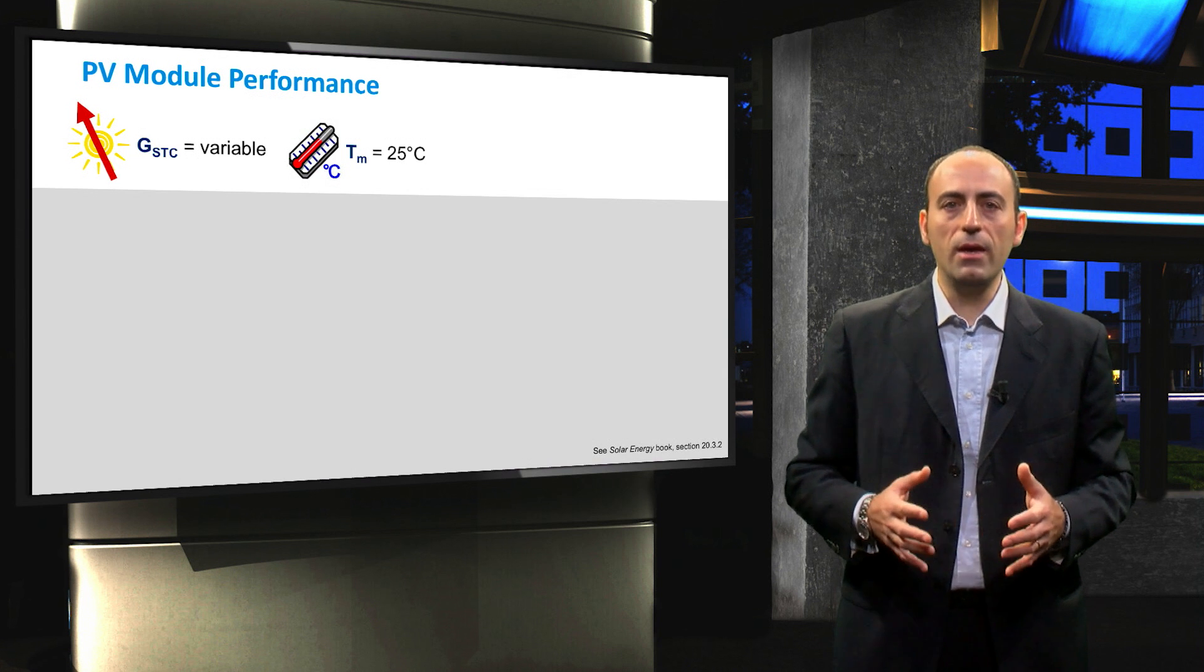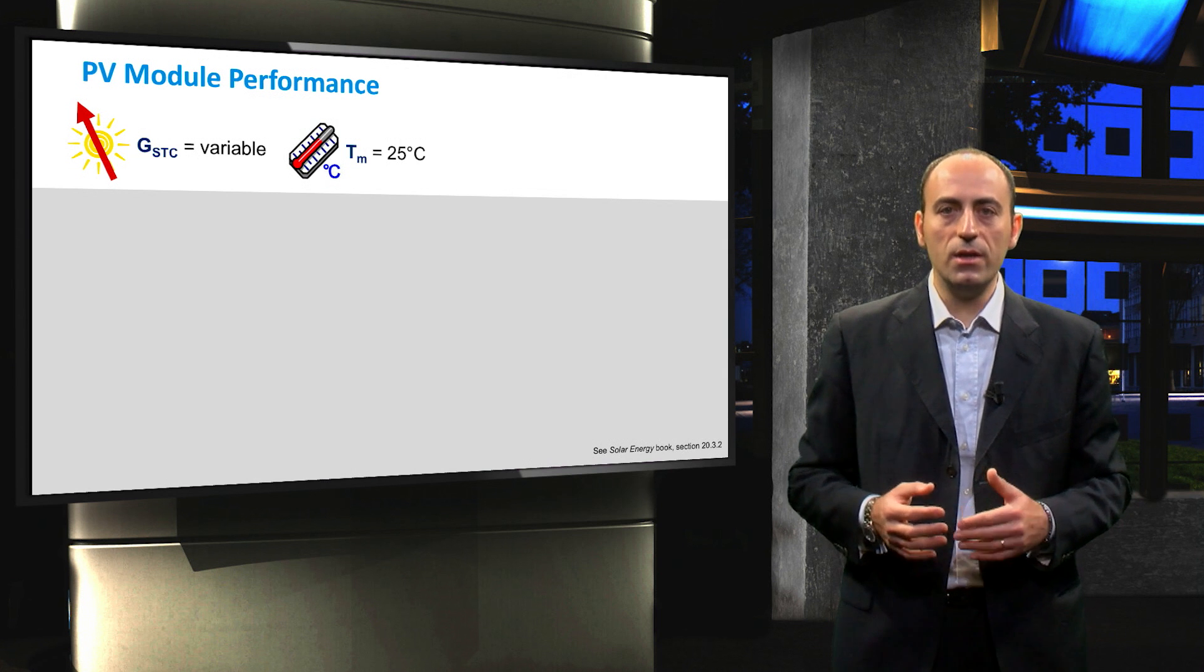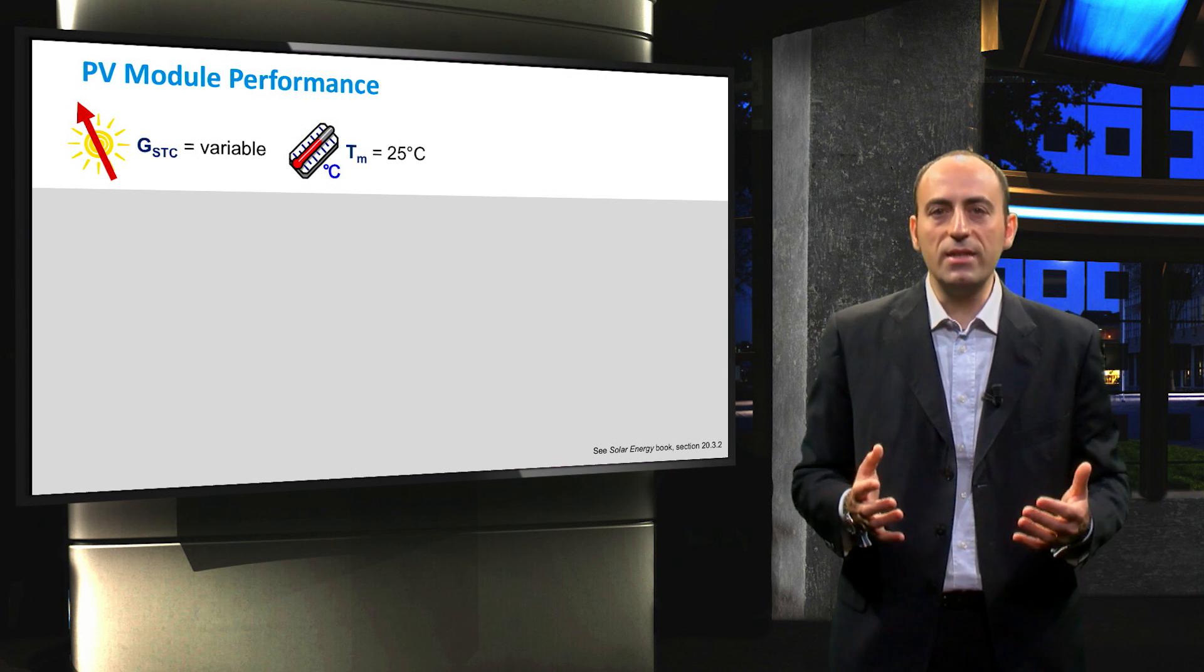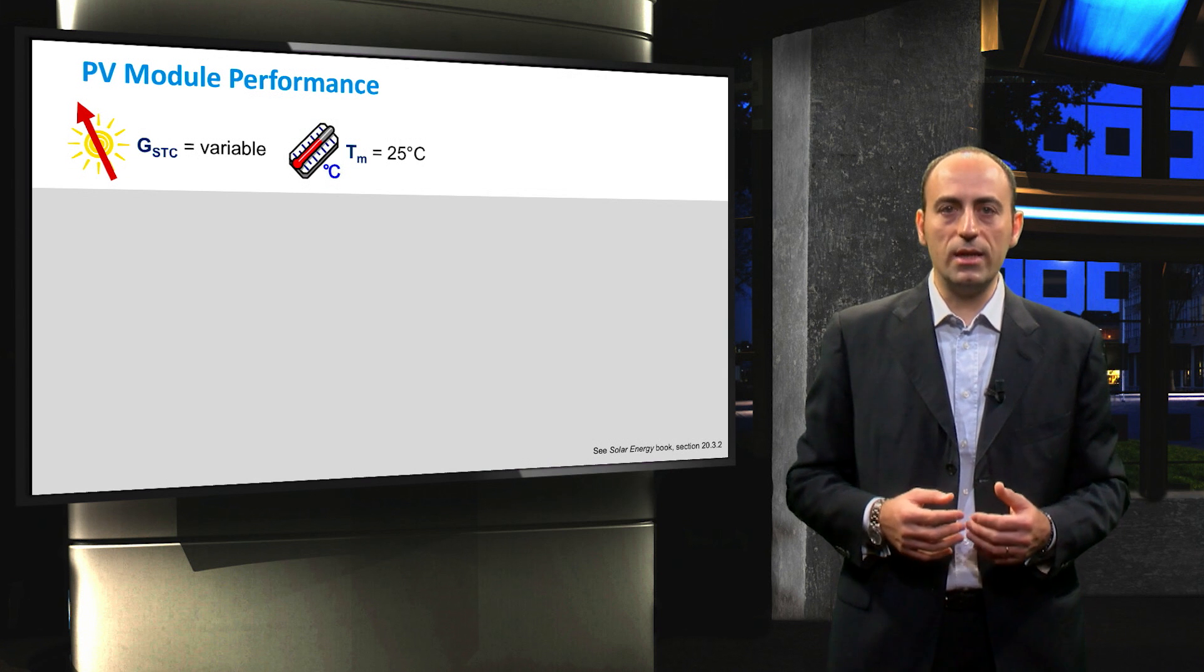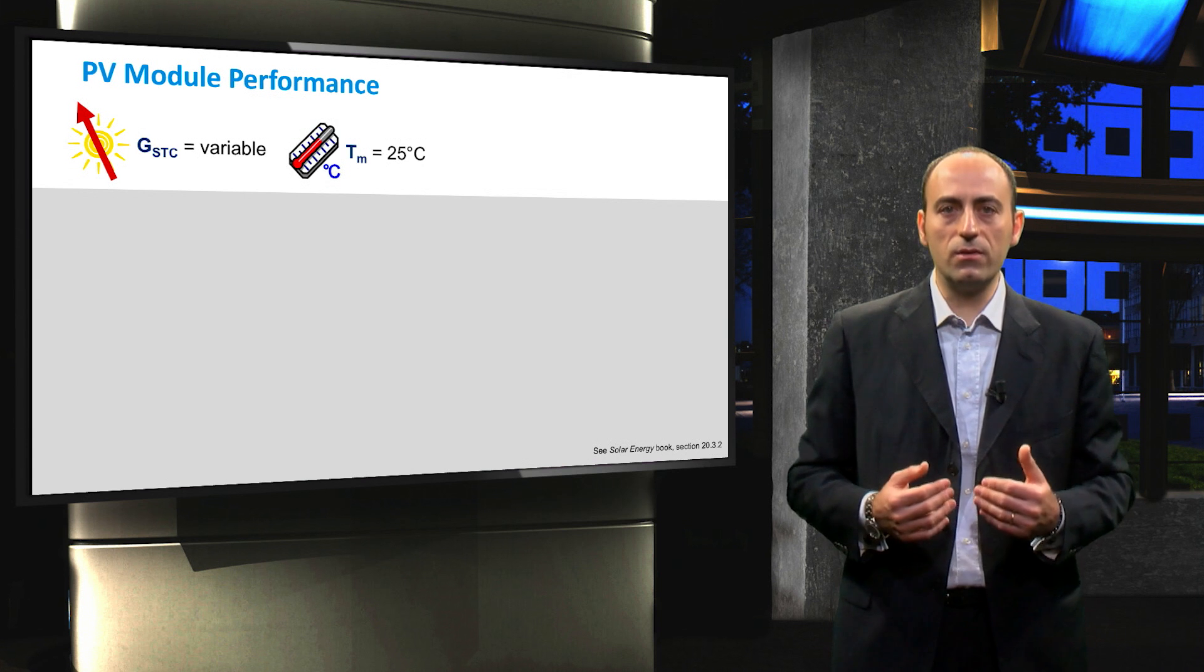On the other hand, if the cell temperature is kept constant and the irradiation varies, intuitively, we can say that the power output of a solar cell decreases considerably with the decreasing irradiance incident on the PV module. However, the quantitative evaluation of how changing irradiance affects the PV module parameters is less straightforward than for the effect of temperature.